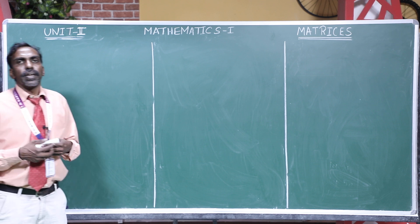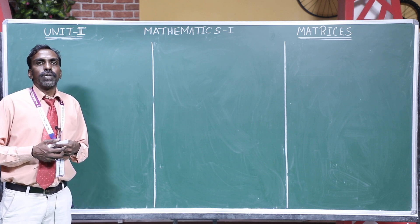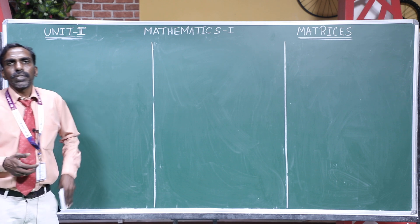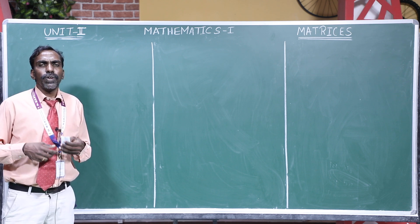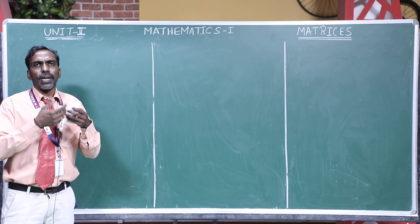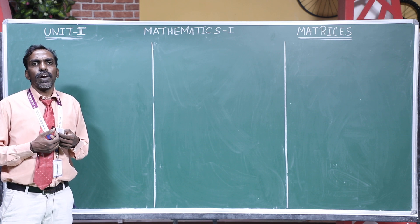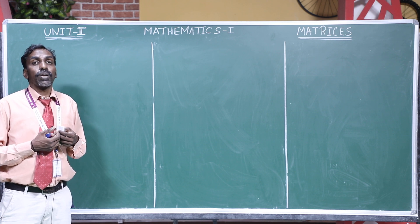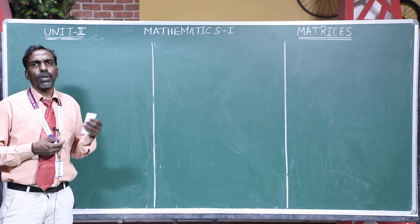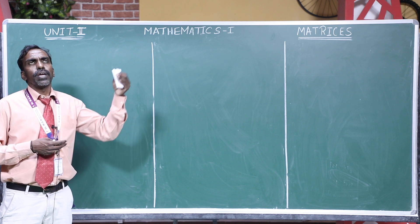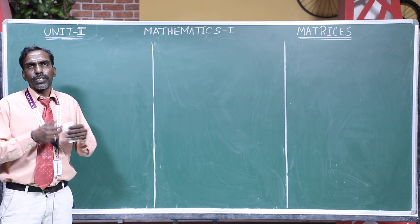Today we are discussing the diagonalized matrix. We form the diagonalized matrix by using the orthogonal transformation. In this method, there are totally five steps we should follow.